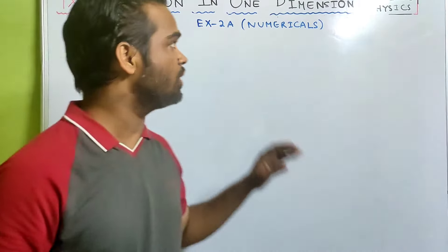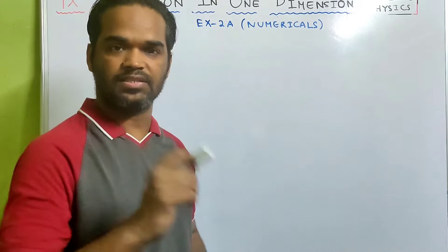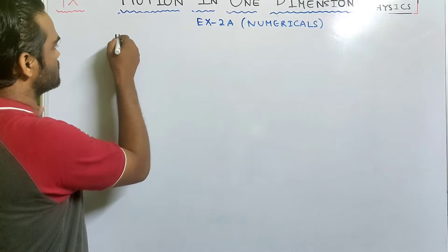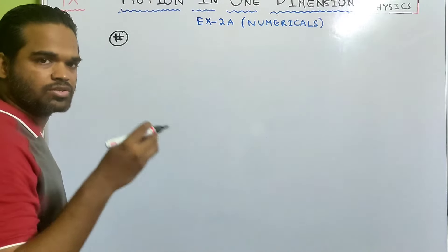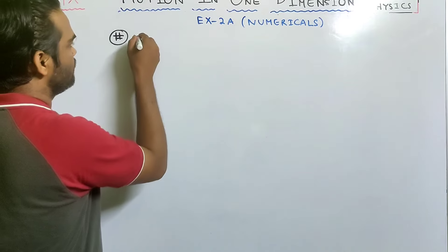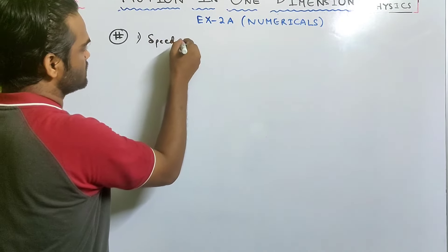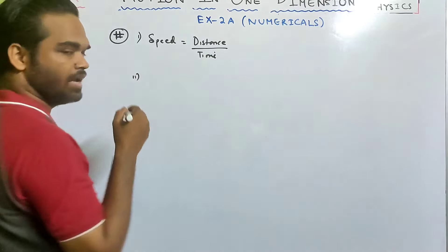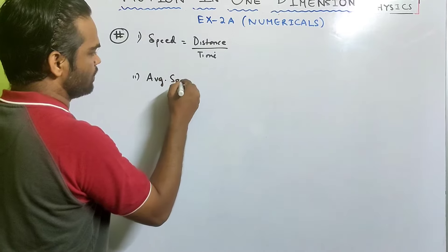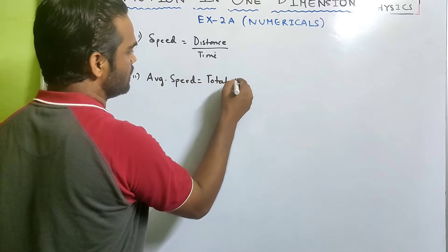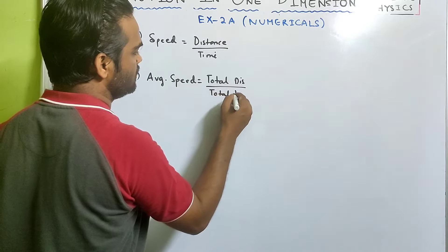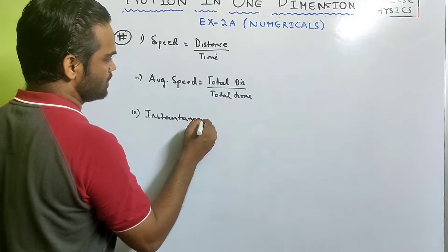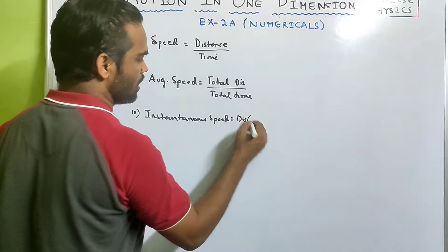Hi kids, in this video we'll continue with motions in one dimension, physics class 9, and we will discuss numericals from exercise 2A, Concise Physics. Before going into the numericals, let us do a quick recap of the previous lesson. The speed of a body is given by distance divided by time. Average speed is total distance by total time for the journey.